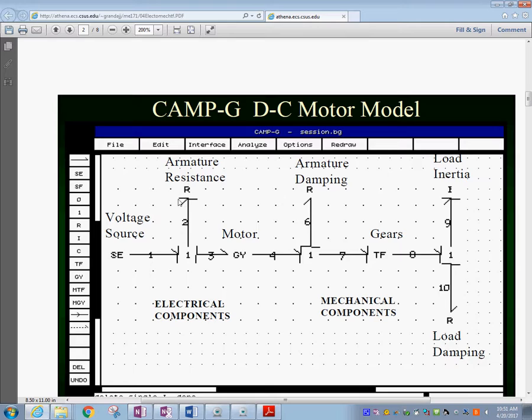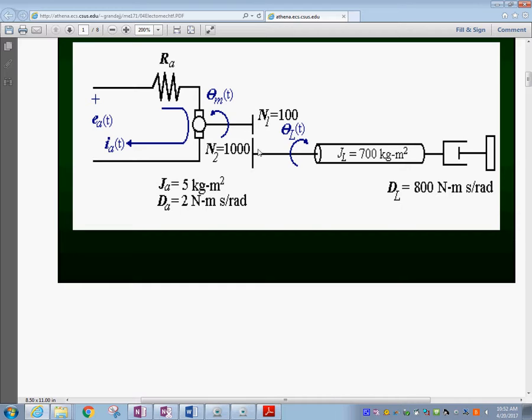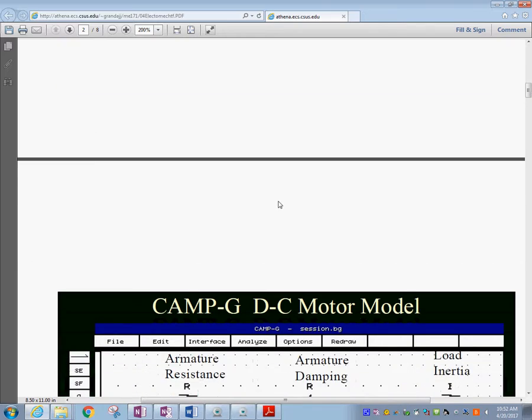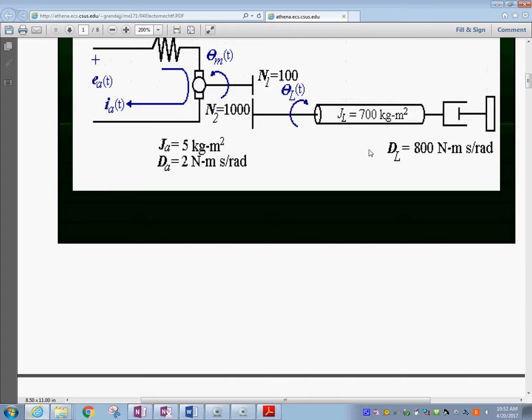On the left hand side we have the motor with the armature resistance and the voltage. This is the GY element which is the motor, and then you have the armature damping. Then we have the gears here, so the angular velocity at this point corresponds to the angular velocity right here. Then you have the transformer and then you have the second angular velocity over here.